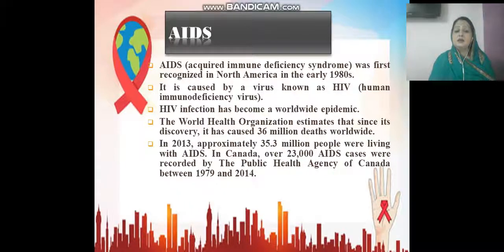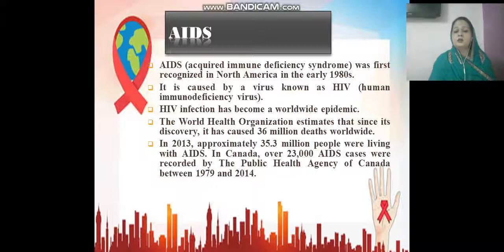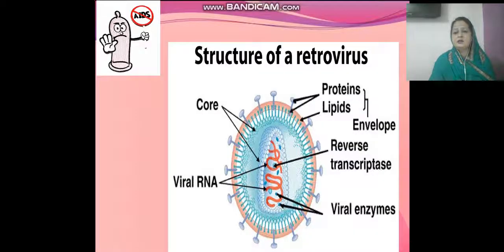Another disease is AIDS — Acquired Immunodeficiency Syndrome — first recognized in North America in the 1980s. It is caused by the HIV virus, which is a retrovirus. HIV infection is a worldwide epidemic. The World Health Organization estimates that approximately 36 million people have died worldwide from this disease. In 2013, approximately 35.3 million people were living with AIDS globally.